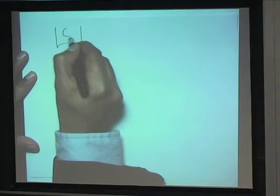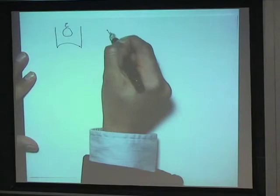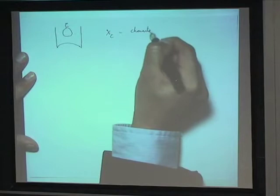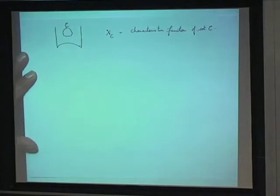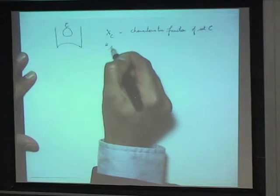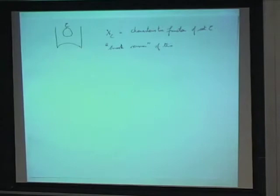Let me say something about how the proof will go. Here's our fundamental domain, and we have some nice set C inside it. I want to understand what proportion of f lies inside C. I'm looking at the characteristic function chi of C, which is 1 if the point is in C and 0 otherwise. Really you might want to think of some smooth version of this — smoothed at the boundary.